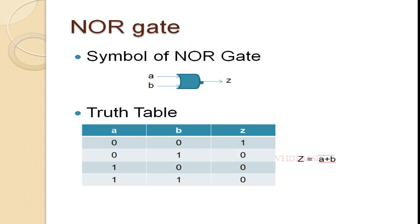This is the NOR gate simple diagram where A and B are inputs and Z is the output. Referring to the truth table: whenever both inputs A and B are zero, output Z is 1; all other combinations of A and B give Z equal to 0. When A is 0, output Z is the inversion of B; when A is 1, irrespective of B, output Z is 0. This means we can connect: select to A, I0 to B_bar, and I1 to 0.